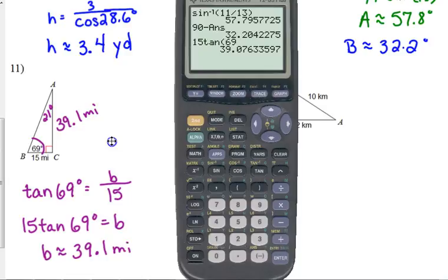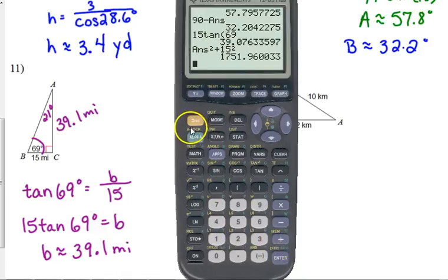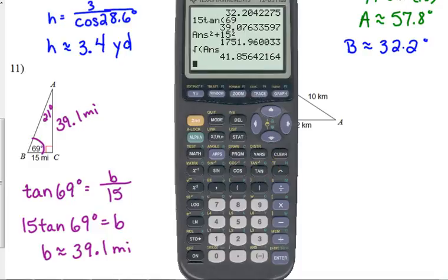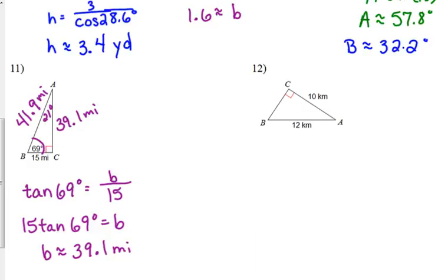And then, since we're finding the hypotenuse, let's just go ahead and do the Pythagorean theorem. Square that, plus 15 squared, and take the square root. It's a little bit easier when you're finding the hypotenuse versus a leg. So that hypotenuse is 41.9 miles. It's the longest leg. The leg that we found was bigger than the one that was given, because the angle opposite of it was bigger. Okay.